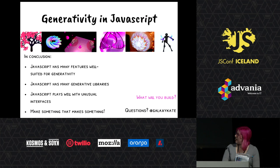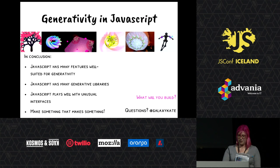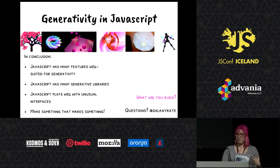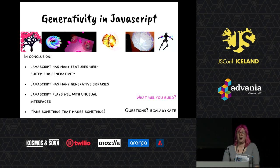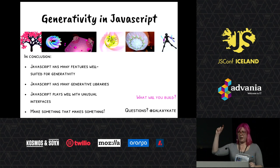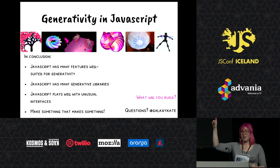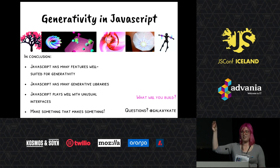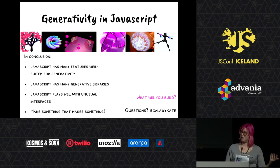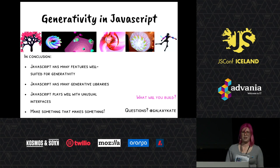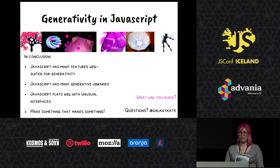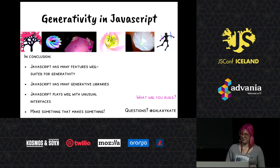In conclusion, JavaScript has a lot of good features — it has libraries, it plays well with unusual interfaces, and you can make something that makes something. It's not hard to build these things. I made a bot and my bot makes art stickers. If you've ever made an art bot or something that makes what you consider art, come up to me and you can totally get one of those stickers. If you haven't, come up to me later and I will show you how to use Tracery and in five minutes you will have an art bot and then a sticker.